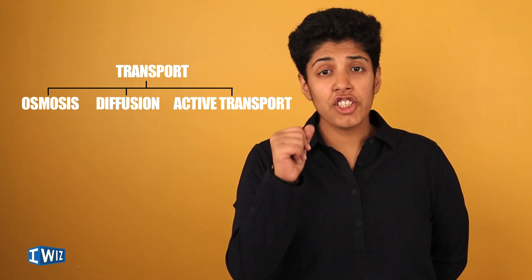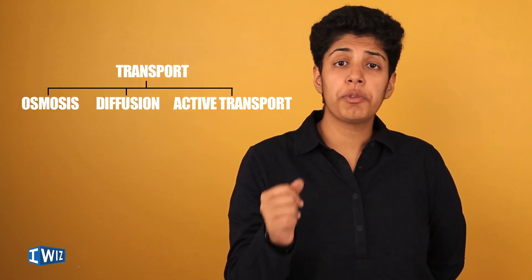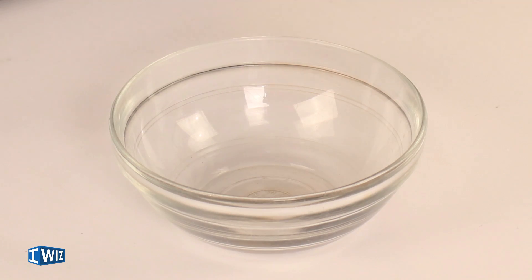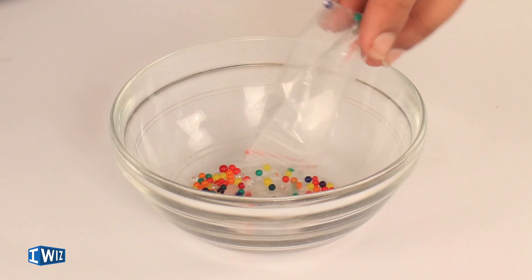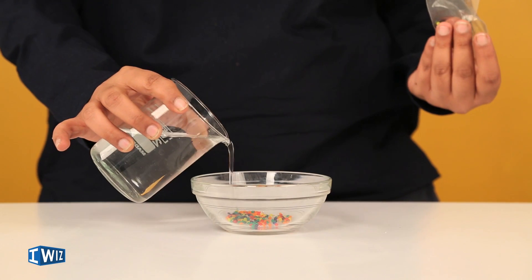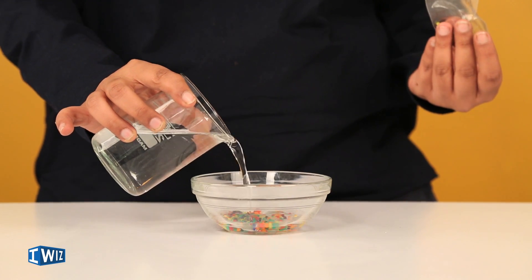The next type of transport is osmosis. To demonstrate, I have a pack of Orbeez — I'm going to put them in a bowl and pour in some water. You've probably seen this at home and know what happens to the Orbeez.